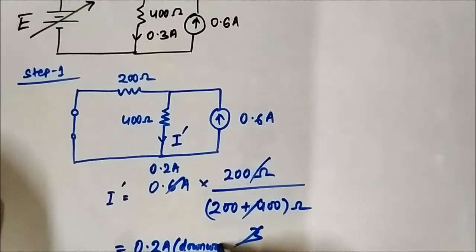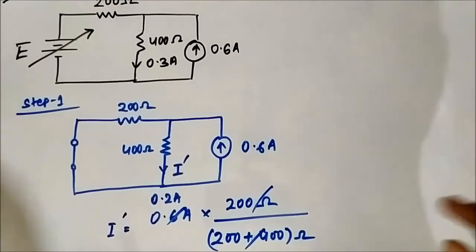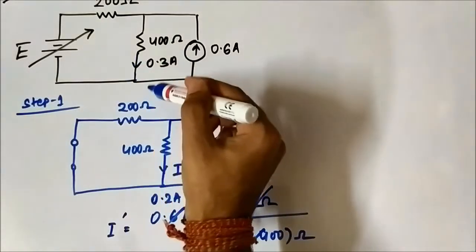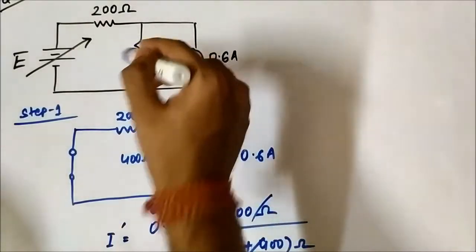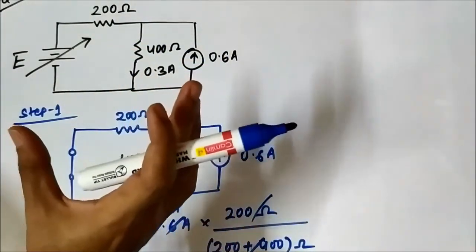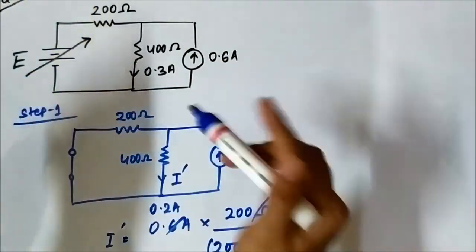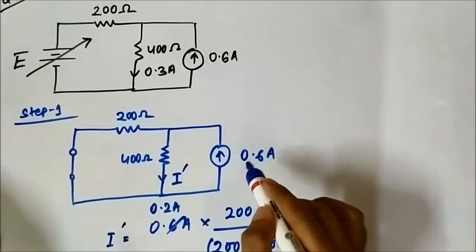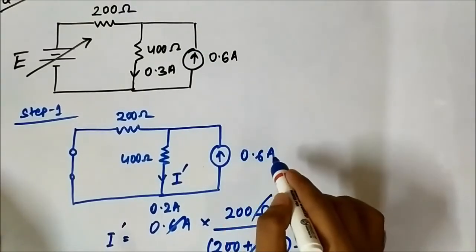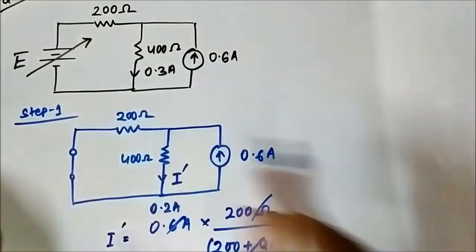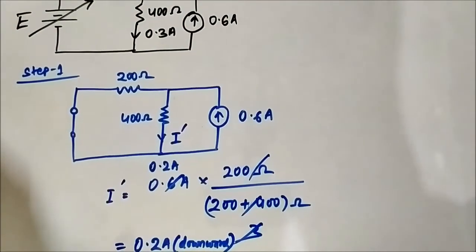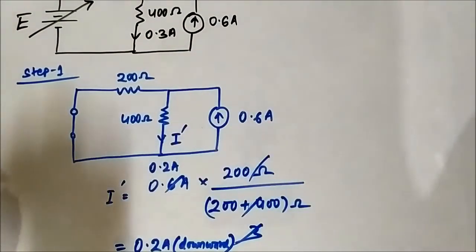I always emphasize that we must pay close attention to the direction of the current and the polarity of the voltage — that is very important. In the original question, the current flowing through the 400 ohm resistor is 0.3 ampere downward — this is the total current due to both sources combined. When we considered only the 0.6 ampere current source and deactivated the voltage source, the current through the 400 ohm resistance is 0.2 ampere downward.